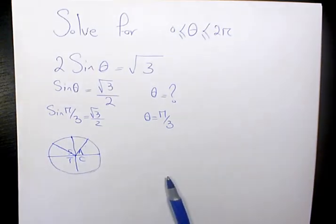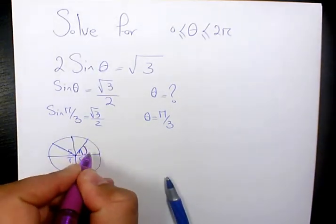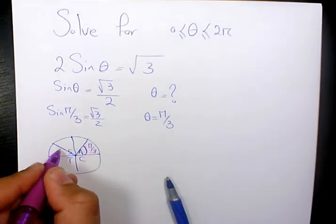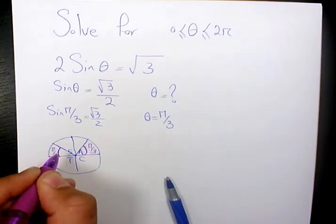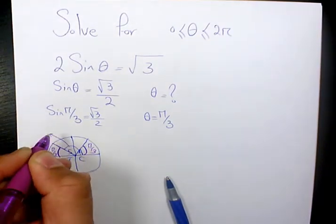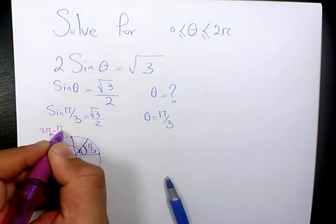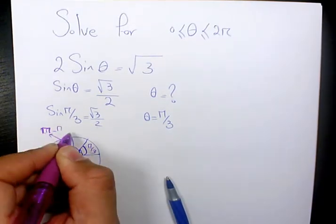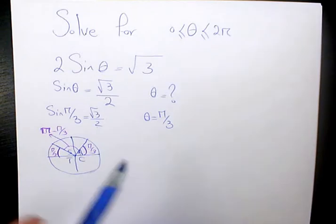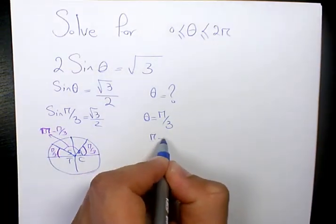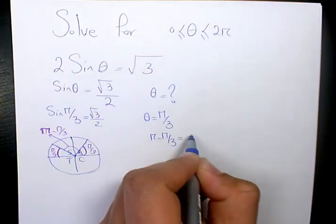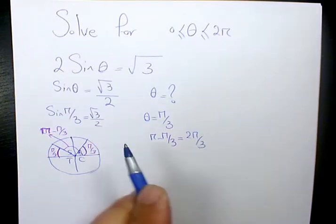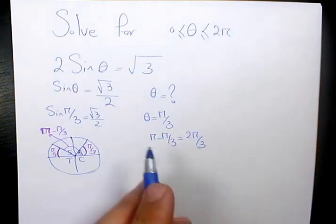So this one is π over 3, here we have π over 3, so this angle will be π minus π over 3. So the second answer is going to be π minus π over 3, which will be 2π over 3 when you do common denominator. So the answers are π over 3 and 2π over 3.